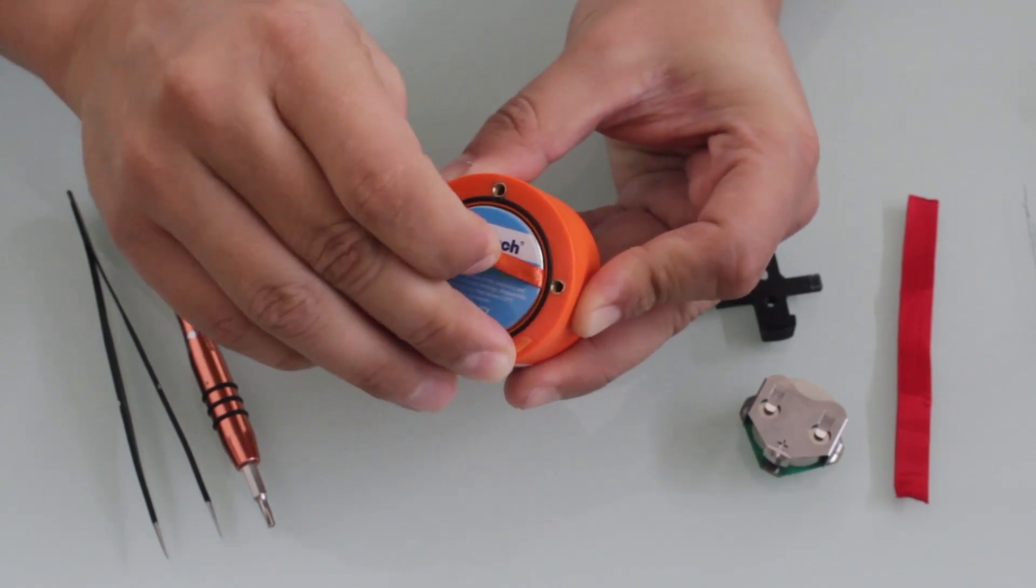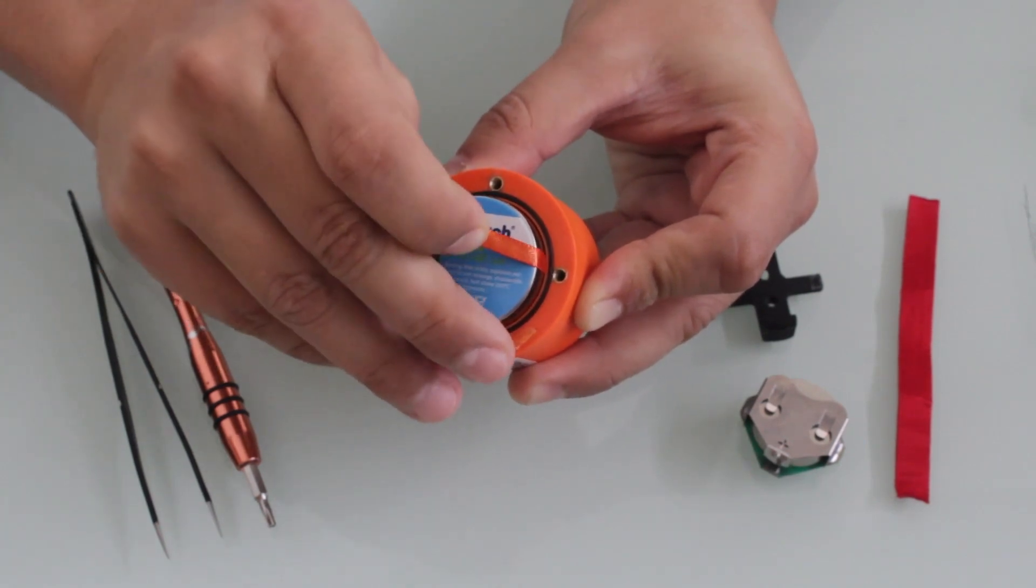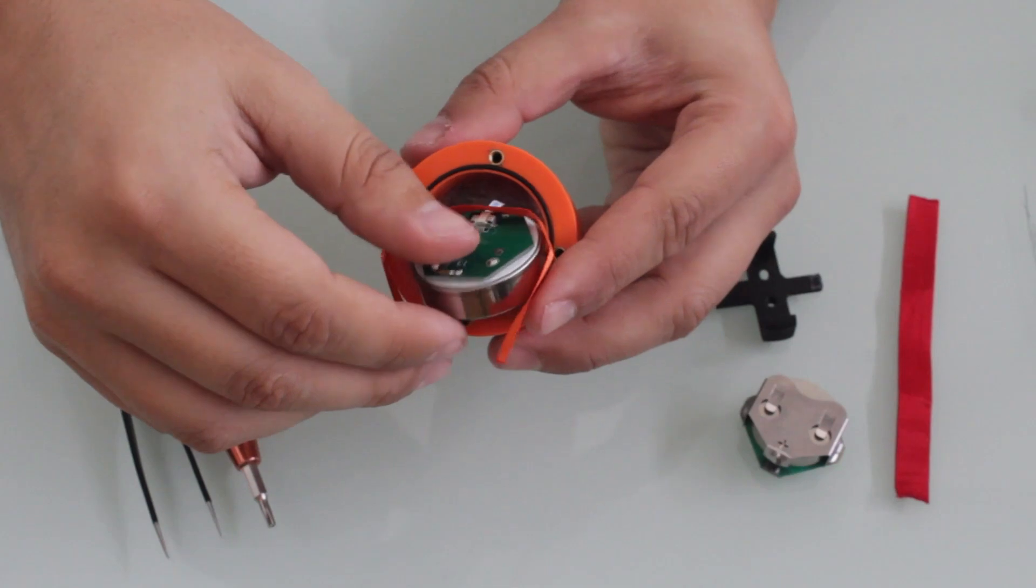Slowly remove it so you don't damage the flat cable that is inside the sensor. Once the battery is out of the sensor, you can remove the ribbon.